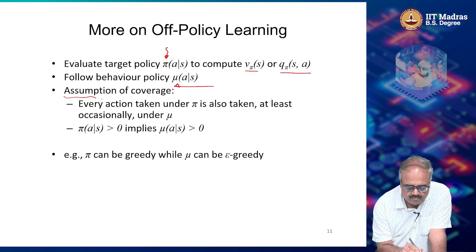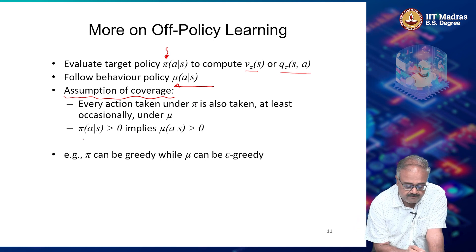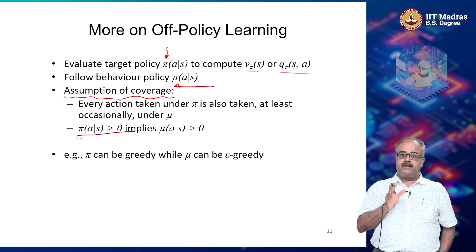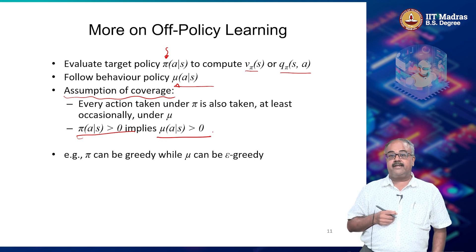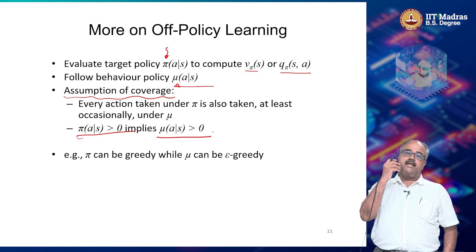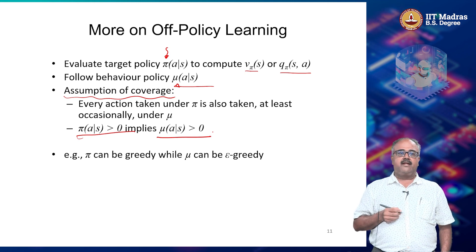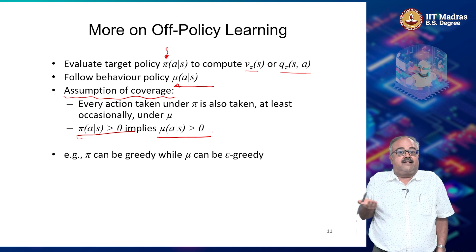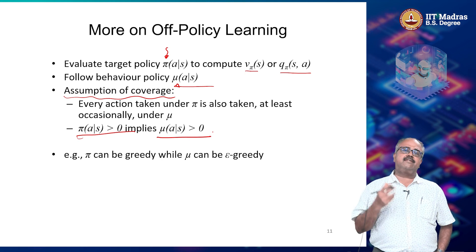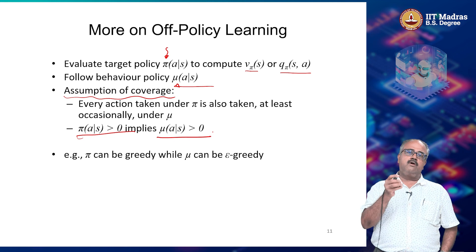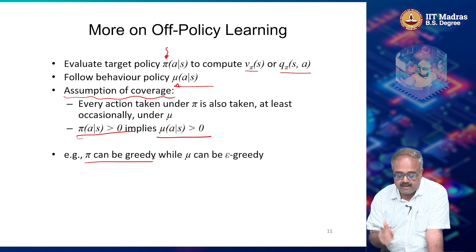The first thing we have to assume is some kind of coverage. For every action that can be taken under pi — if pi(A|S) is greater than 0 — then mu(A|S) should also be greater than 0. If there is some probability that I will take action A under pi, then there should be some probability that I will take action A under mu. It does not have to be the same probability. If the probability of taking action A under pi is 0, I do not care if I take the action under mu or not.